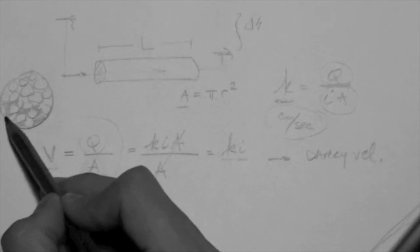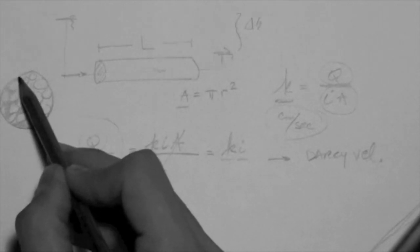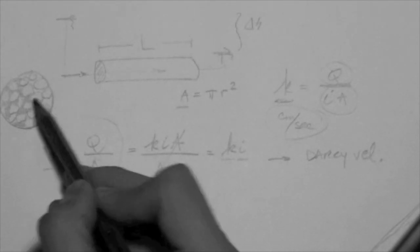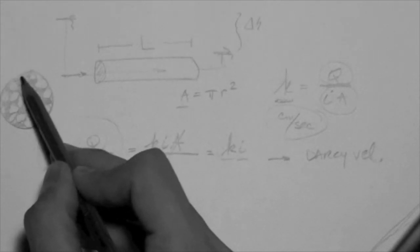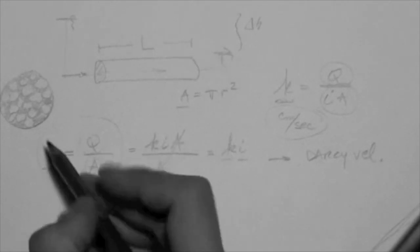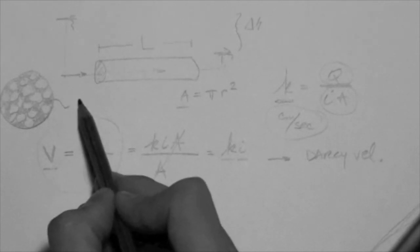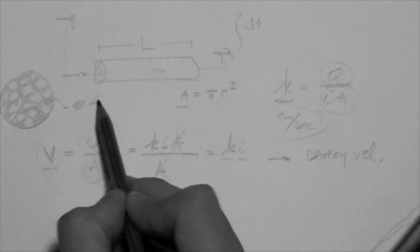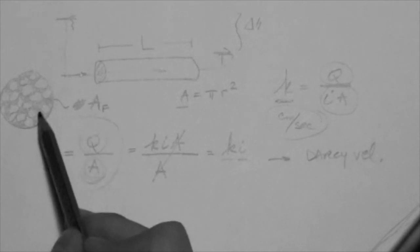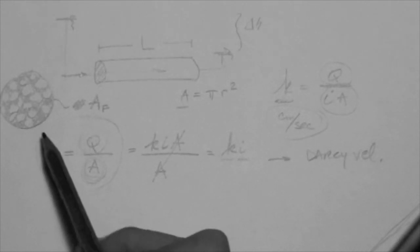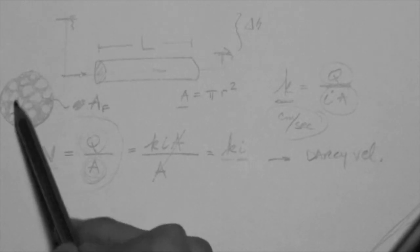I hope that you can see what I'm doing here. I'm basically shading the area not comprised by particles. That's the void area. Those are the voids. So the true area of flow is that shaded area. The area available for flow is smaller than the actual area of the cylinder, because the particles occupy some of that volume.